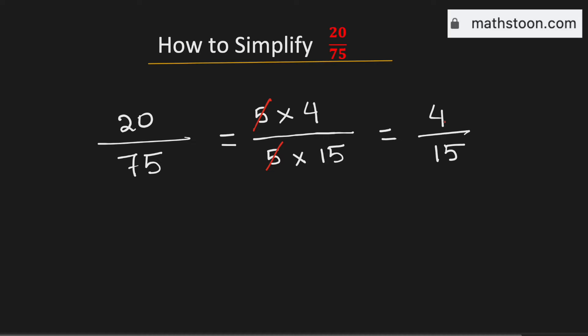Now we know that there is no number which can divide both 4 and 15 other than 1. So 4 over 15 is already in simplified form. Therefore, 4 over 15 is the simplified form of the fraction 20 over 75, and this is our final answer.